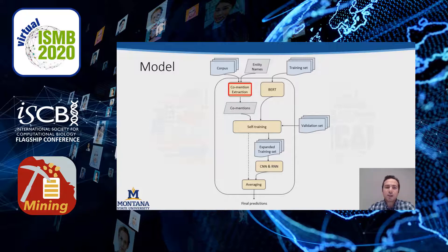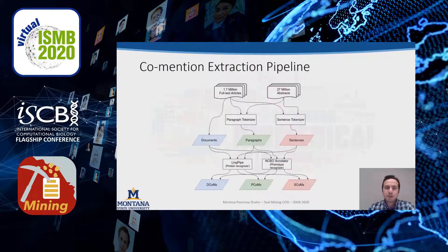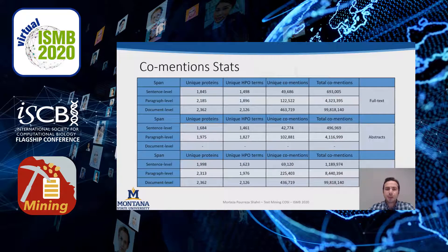First, we start with extracting all co-mentions from biomedical literature. We begin with 1.7 million full-text articles and 27 million abstracts. After tokenization, we extract phenotypes and proteins using NCBO Annotator and LinkPipe. We end up with around 700,000 sentence-level co-mentions from abstracts and more than 1.1 million sentence-level co-mentions from full-text articles.